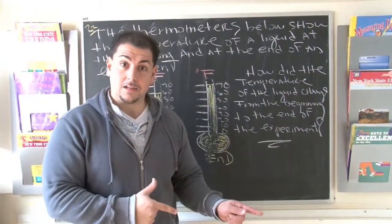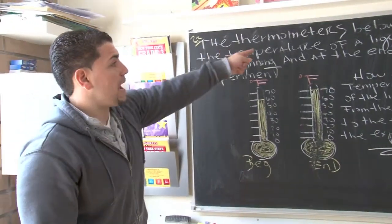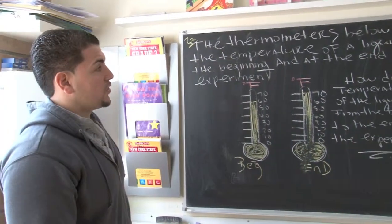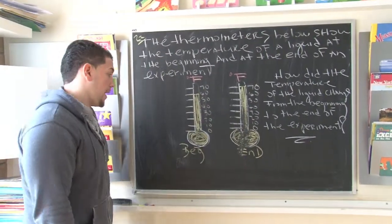But in order for a thermometer to change, we've got to add heat. So keep that in mind. Let's check out the question. It says the thermometers below show the temperature of a liquid at the beginning of an experiment and at the end of an experiment.